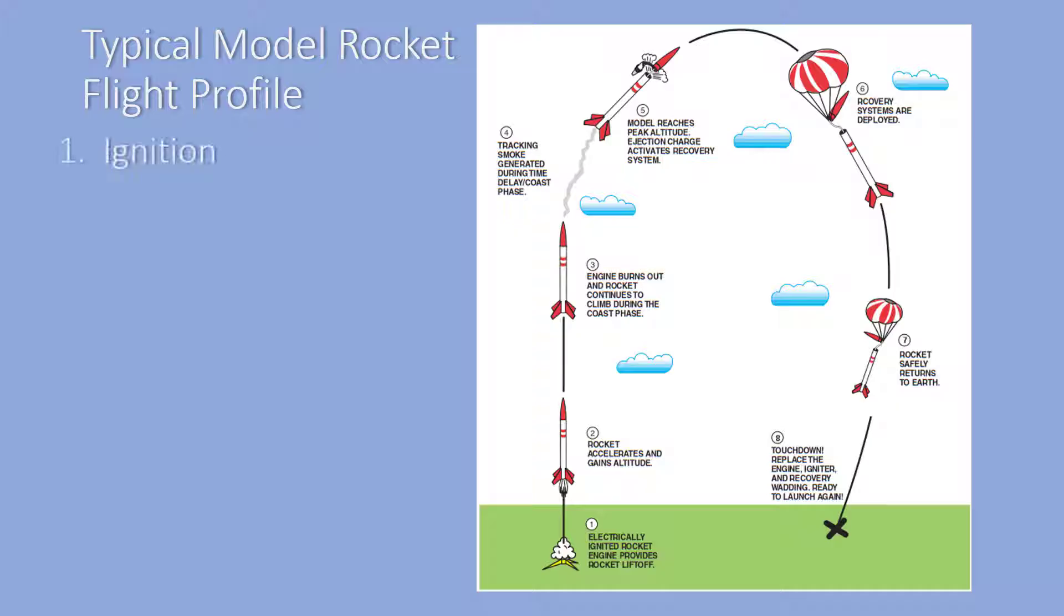The flight starts with the ignition of an engine or motor. We will use an electrical system to ignite the solid propellant engine. After ignition, the rocket goes through the boost phase. During this phase, the engine is burning rapidly and generating thrust to push the rocket into the air. The rocket rapidly accelerates during this phase of flight.